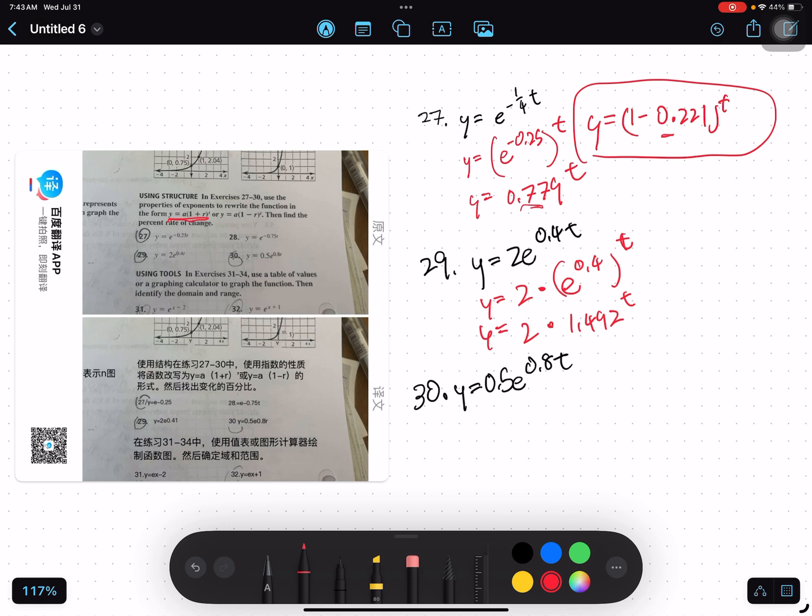Now, if we want to write this as 1 plus r, we can say y equals 2 times 1 plus 0.492 to the t.